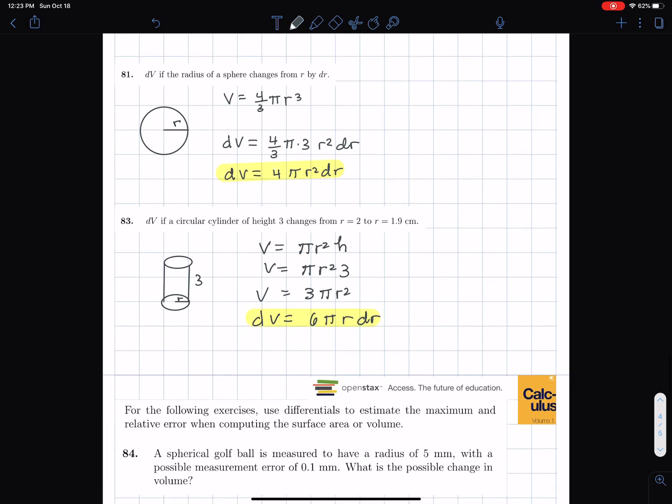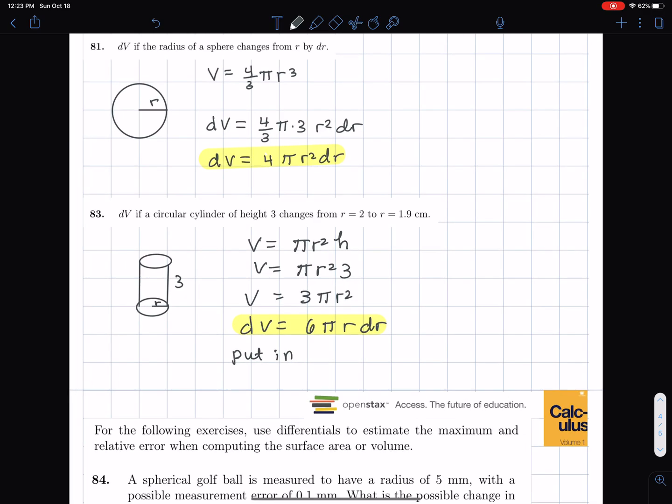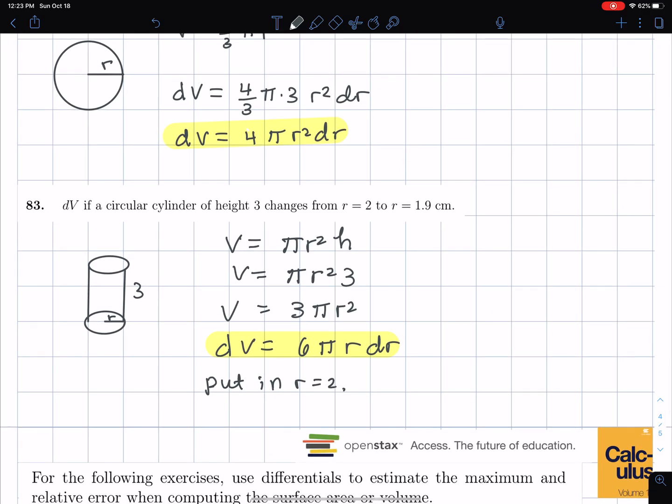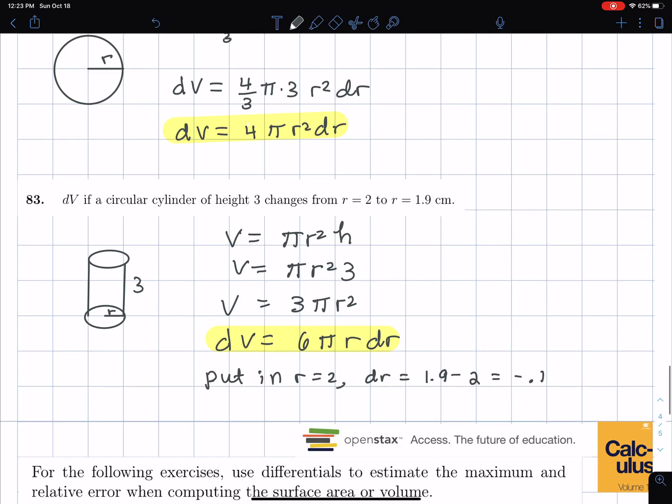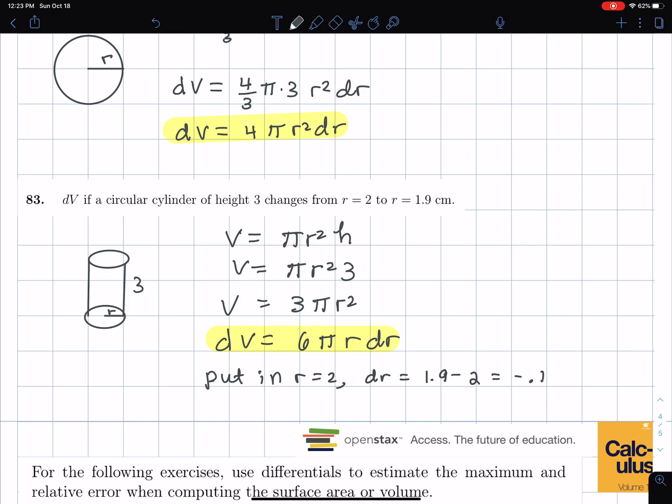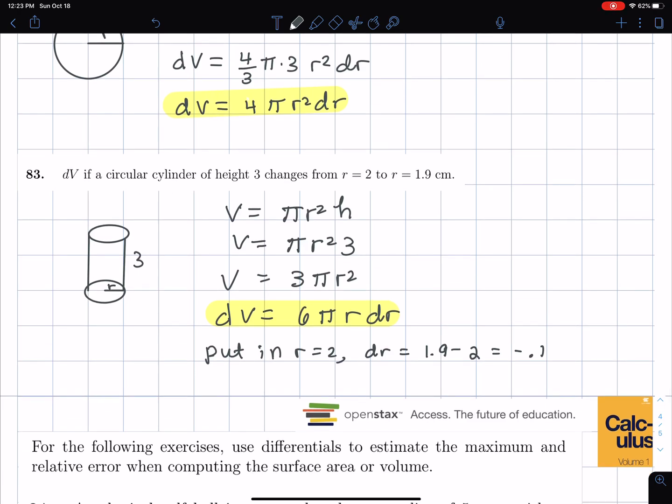And then I'm going to put in r equals 2. And then dr is 1.9 minus 2, which is negative 0.1. So r is shrinking by 0.1. So dr is negative 0.1. So we have dv equals 6 pi times 2 times negative 0.1. So 6 times 2 is 12 times 0.1 makes 1.2 pi. And then don't forget the negative.